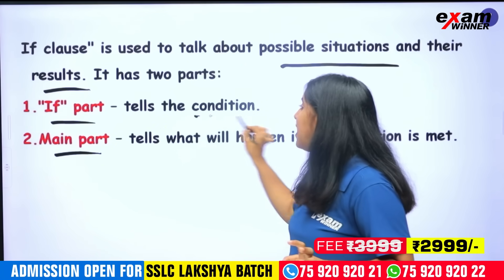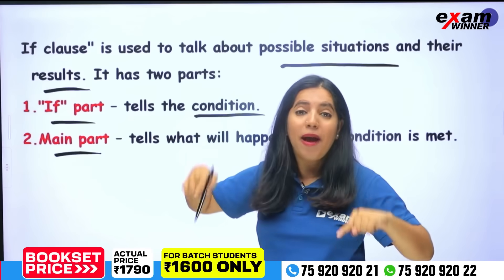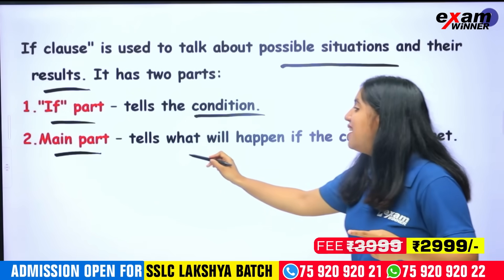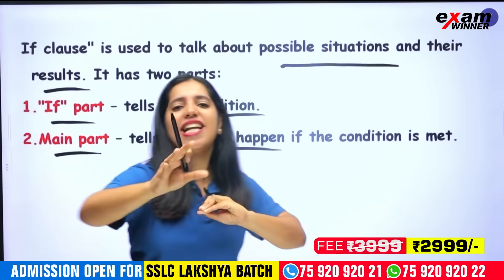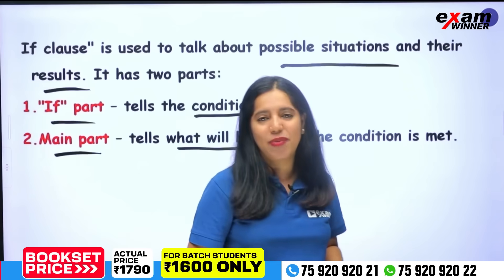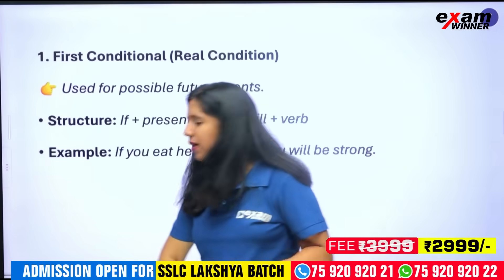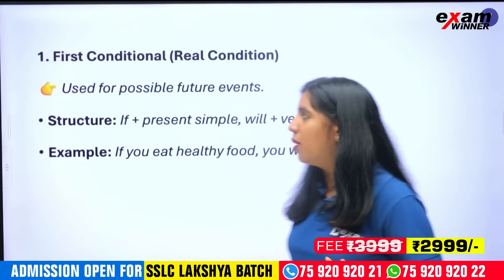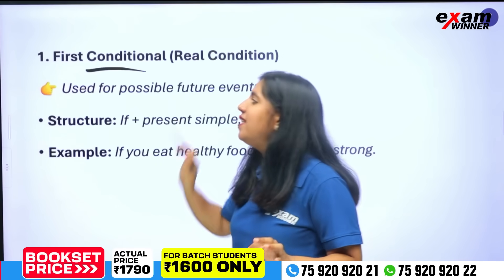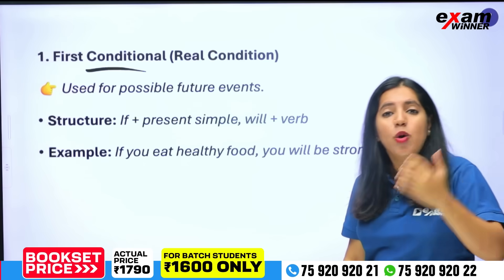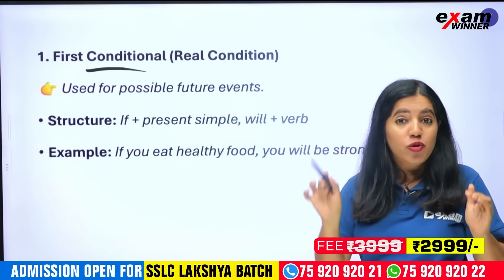The IF part is the condition. If you did this — that's the condition. The main part, the other part, tells what will happen if the condition is met. If part and main part. We will start with three conditions. The first condition is the possible condition — the real condition — used for possible future events.